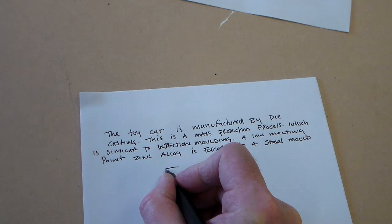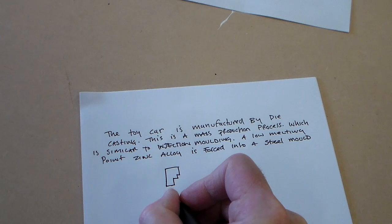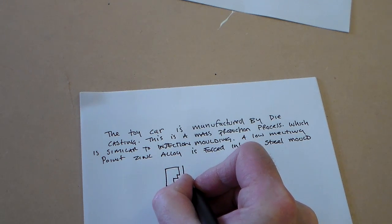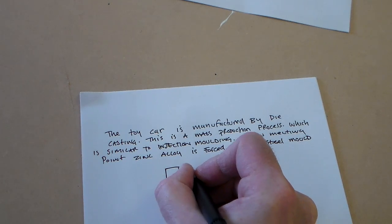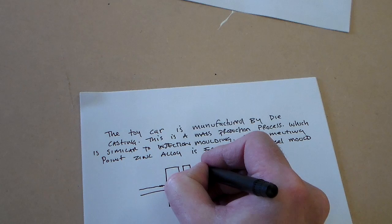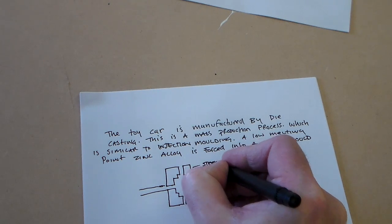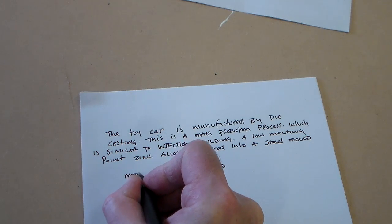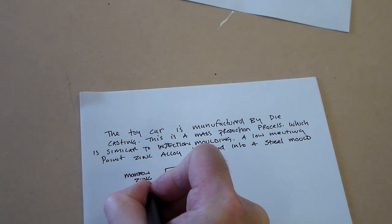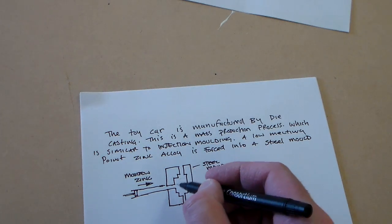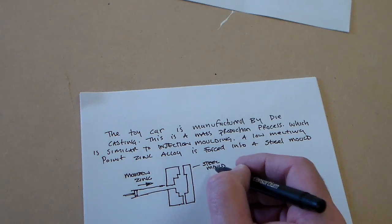Then, we could do some kind of illustration. Perhaps showing a... So just a simple illustration there, really just showing the two parts of the mold and that the molten zinc is injected into here and the steel mold.